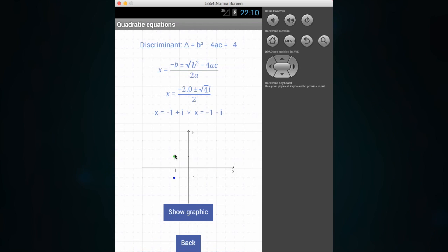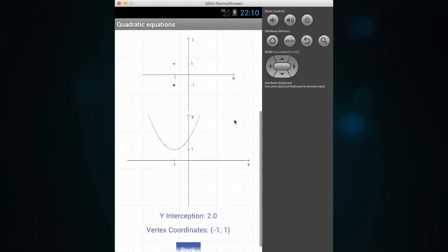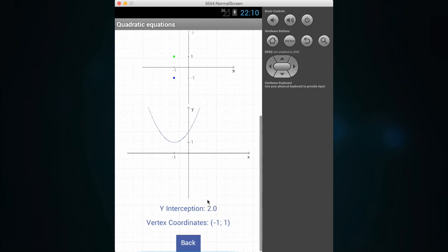You also have here this small graphic with the complex roots position, and we can also see the graphic of the function. Again with the information of the interception on the y-axis and the vertex coordinates that in this case will be minus 1 and 1.